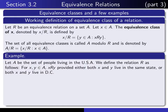Here's a simple example. If we let our underlying set be the set of all people living in the United States, and we define the relation R as follows: if X and Y are two people living in the States, we say that X is related to Y provided they either both live in the same state, or they both live in the District of Columbia. So is that an example of an equivalence relation?